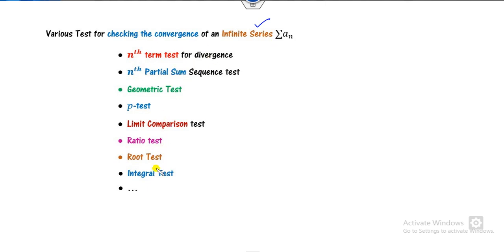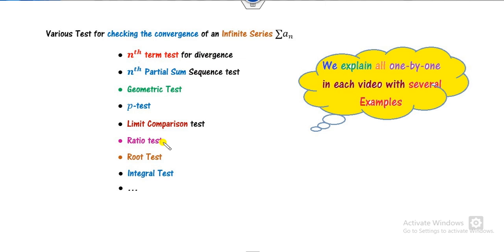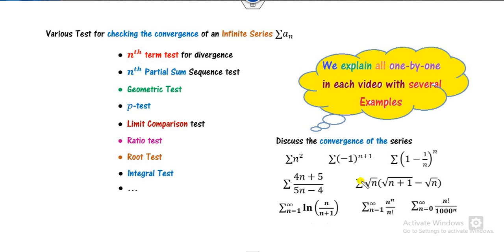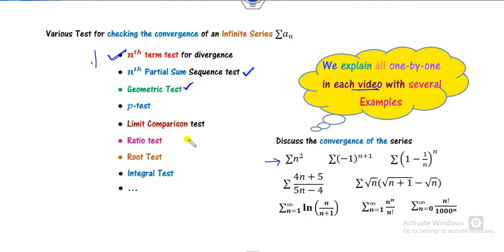There are various tests available to check whether an infinite series is convergent or divergent. We will explain them one by one in each video with several examples. Our approach will be to apply the nth term test first to each problem. If we get the desired result, we stop. Otherwise, we move on to the second test, then the third, and so on.